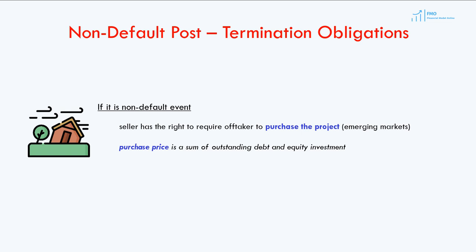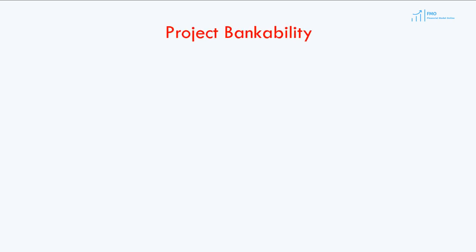We have now reviewed the major terms of the PPA, such as energy sales, parties' obligations, risk allocation, PPA defaults and termination, and post-termination obligations. The reason we had to cover some of the legal terms — which, although important, may not be directly relevant for financial analysis — is a concept called project bankability, or in the case of the PPA, PPA bankability. Bankability means that the project or the PPA is financeable: that the energy seller can raise the necessary equity and debt financing to develop the power project.